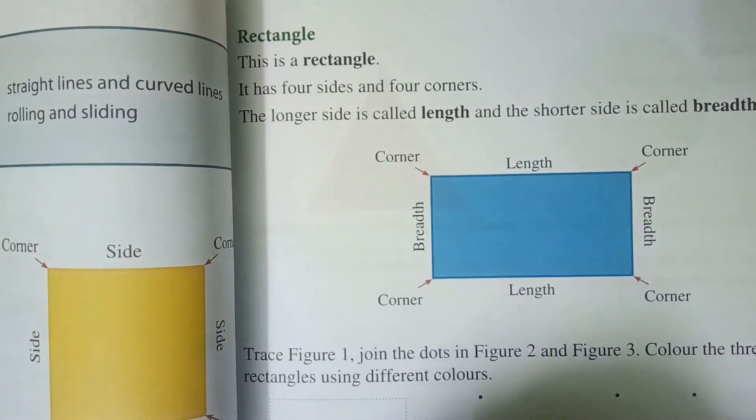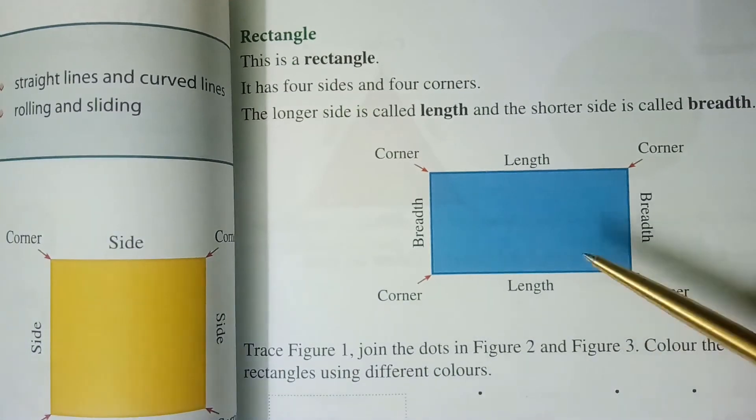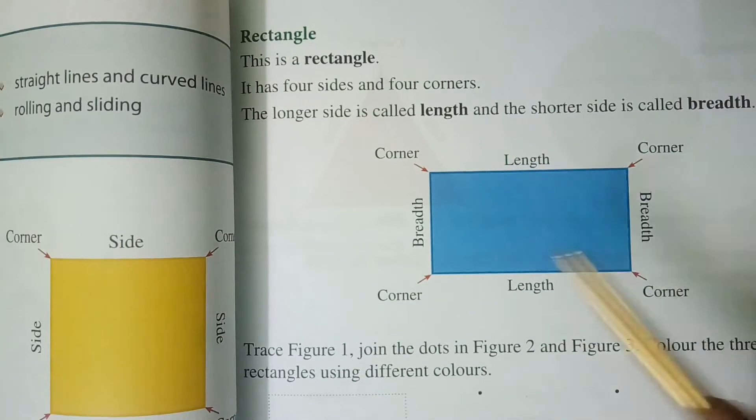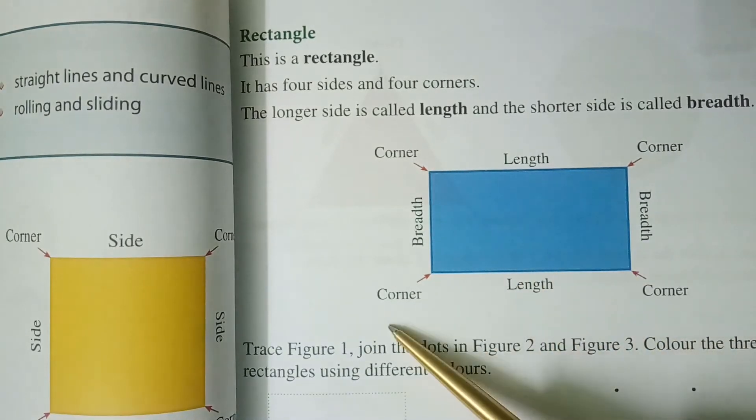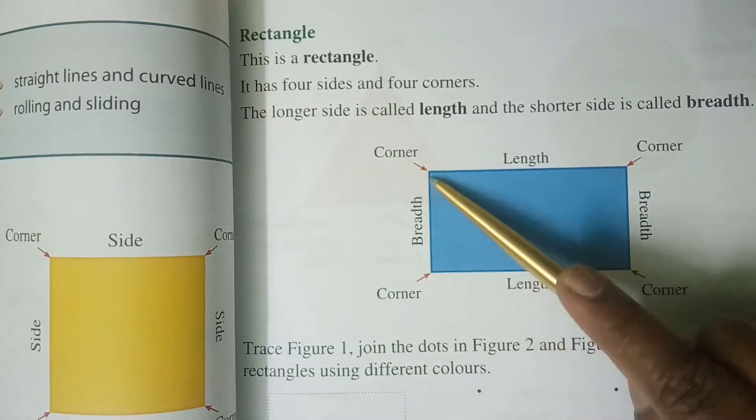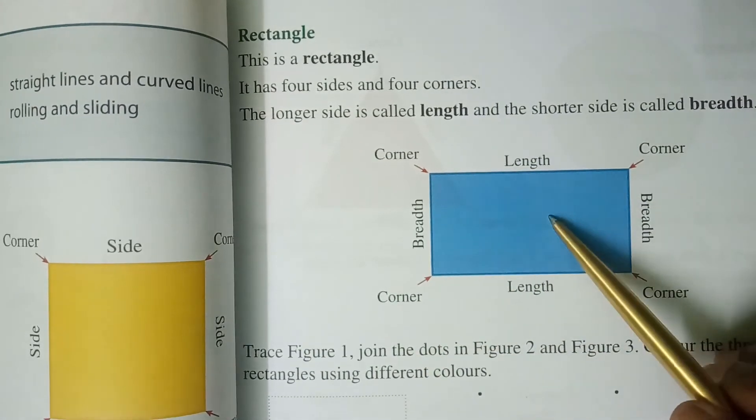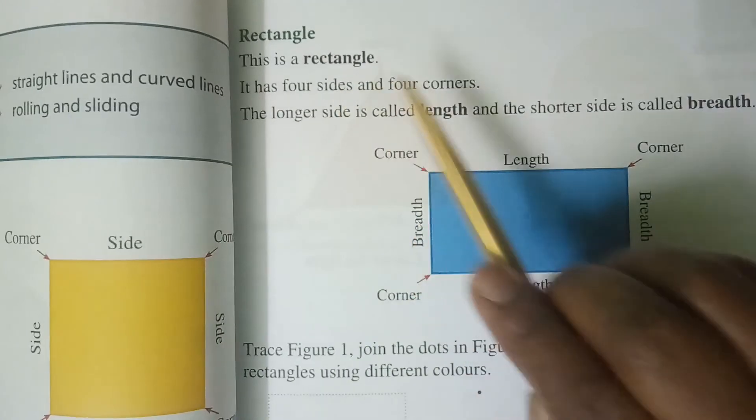As we saw in the square, children, even rectangle also has sides and corners. You can see four corners here and these are four sides. So rectangle has four sides and four corners.